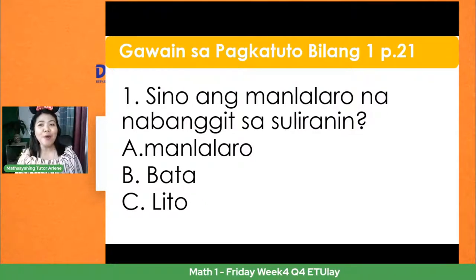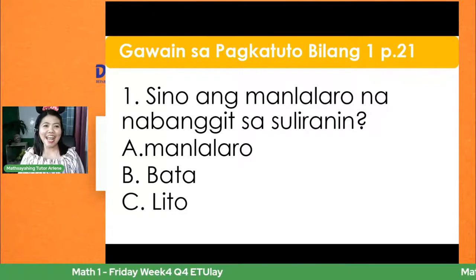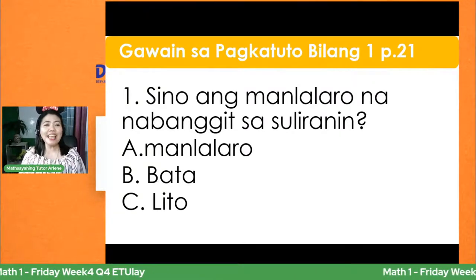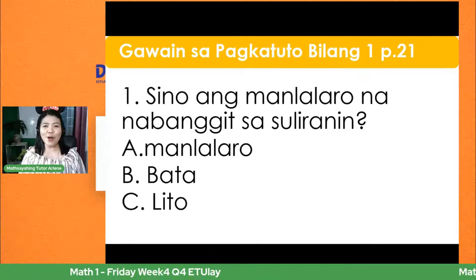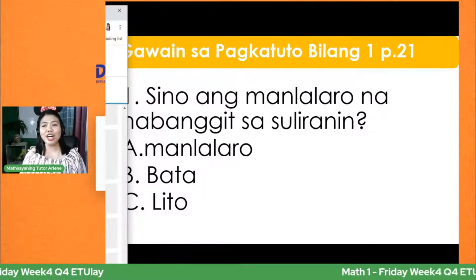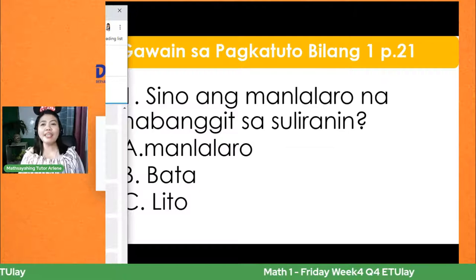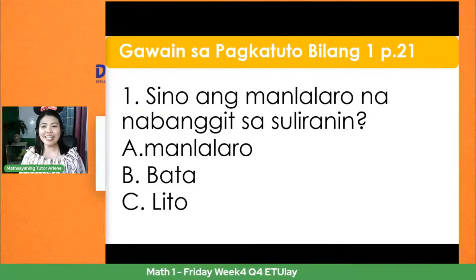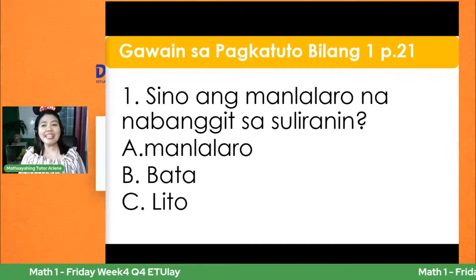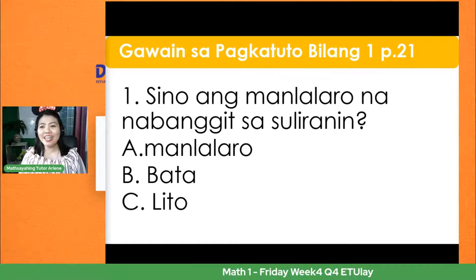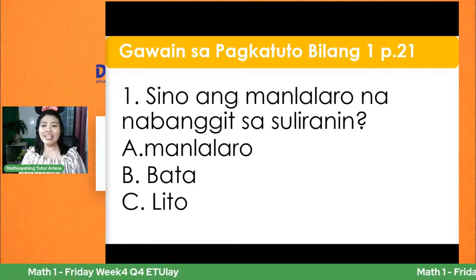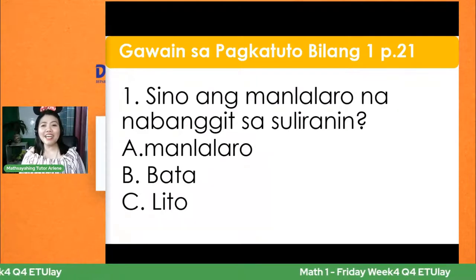Sino ang manlalarong nabanggit sa suliranin? A. Manlalaro. B. Bata. C. Si Lito. Lagyan natin ang number 1 and the letter of your answer. Sabi ni Jersey, ni Karen, ni Aileen, ni Aliana, ni Jake, ni Liam, ni Annabelle, Isaiah, ni Carl, ni Shaina — ang sabi nila ay letter C.